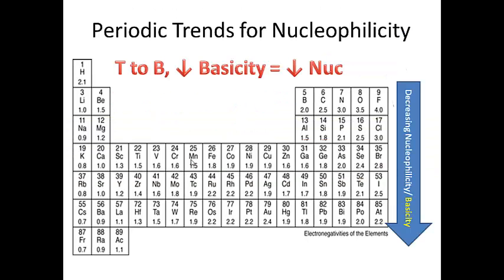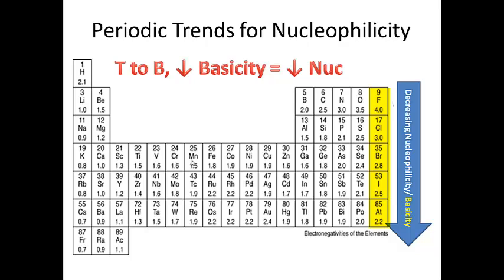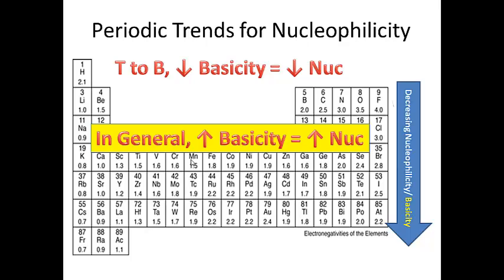Top to bottom is a little bit trickier. Let's take the halogens, for instance — fluorine is more electronegative than chlorine, and chlorine is more electronegative than bromine. But going down a column, nucleophilicity actually decreases. So nucleophilicity is decreasing going down a column and also decreasing going from left to right. From top to bottom, we can't use the electronegativity argument, but we can use the basicity argument and say that in general, the more basic the atom is, the more nucleophilic it would be.